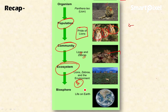Then comes the biome — biome is large parts of the biosphere divided into different parts based on certain characteristics, as discussed in the previous video. Then the biosphere, the last level, is the living part of the earth. It has interaction with the other spheres of the earth: atmosphere, lithosphere, hydrosphere, and cryosphere, as discussed in previous slides. This ends the series of levels of organization of ecology.